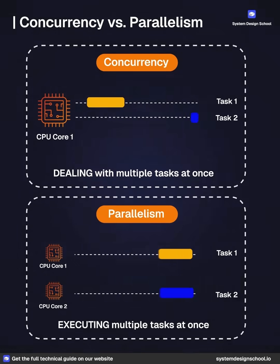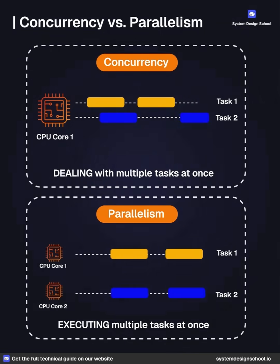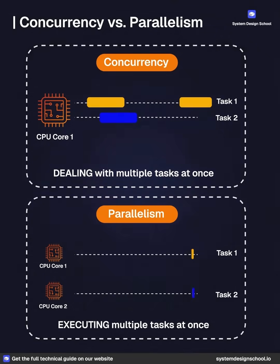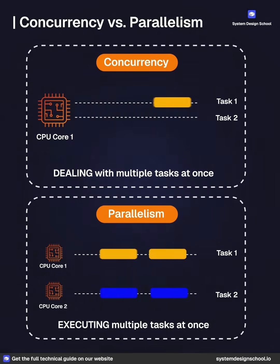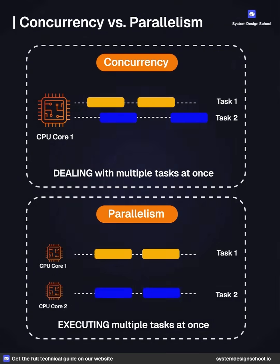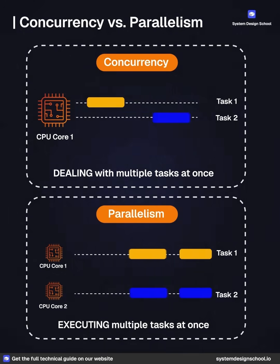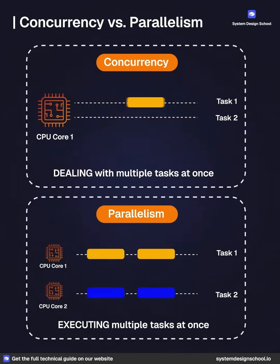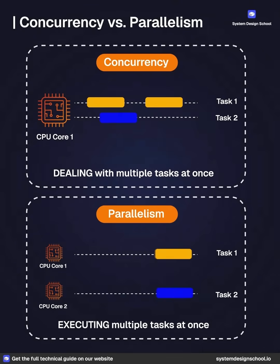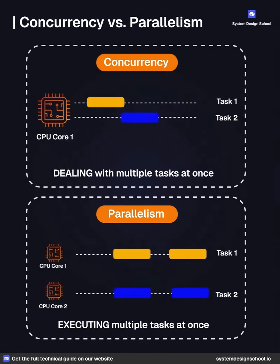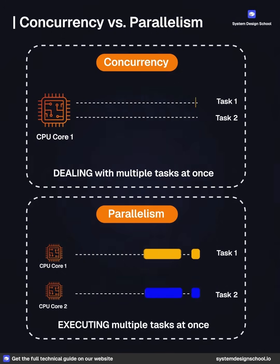How it works: the CPU rapidly switches between tasks, giving the illusion of simultaneous execution. Use case: useful when tasks are I/O bound or waiting on external resources, improving responsiveness and resource utilization.